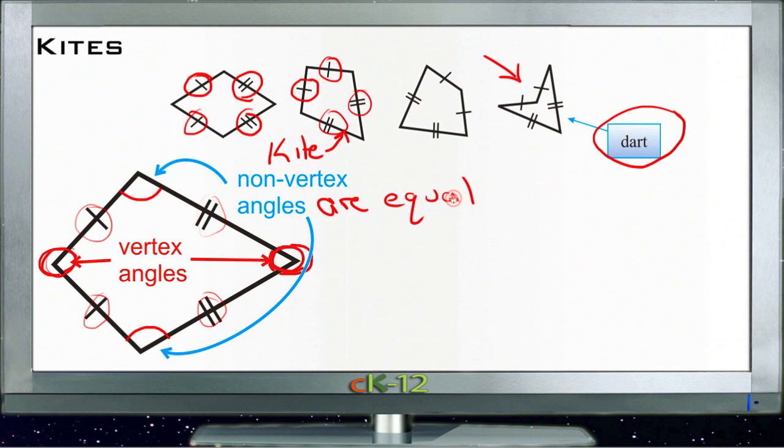And then the diagonals, if you take a diagonal through the vertex angles of a kite, like this, connecting these two kind of long points here, you bisect the kite in half, and you form two congruent triangles.